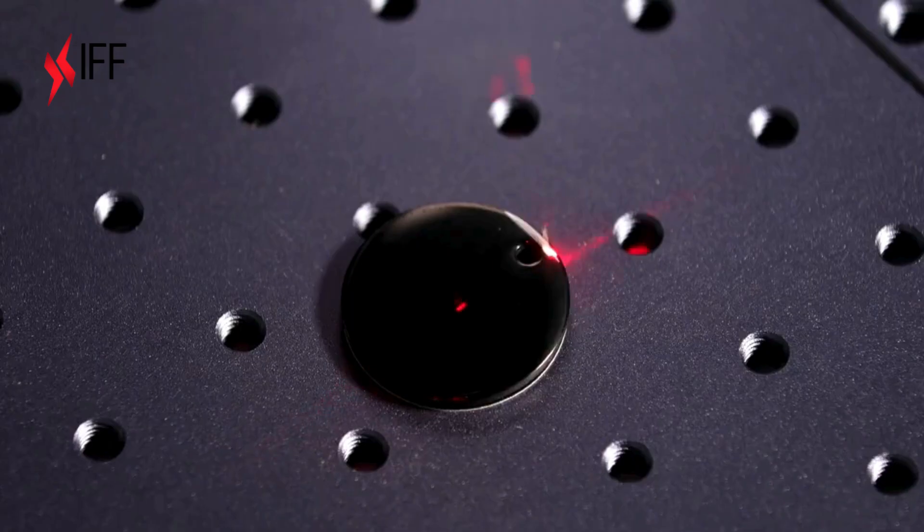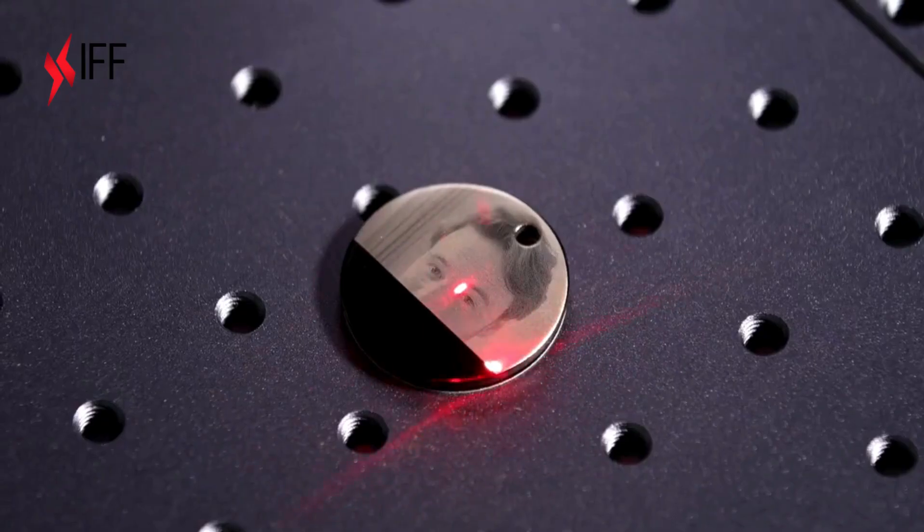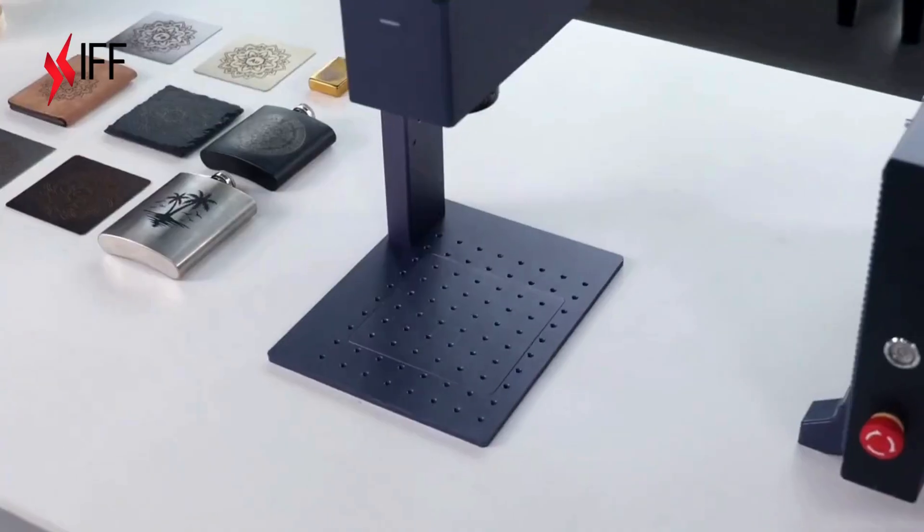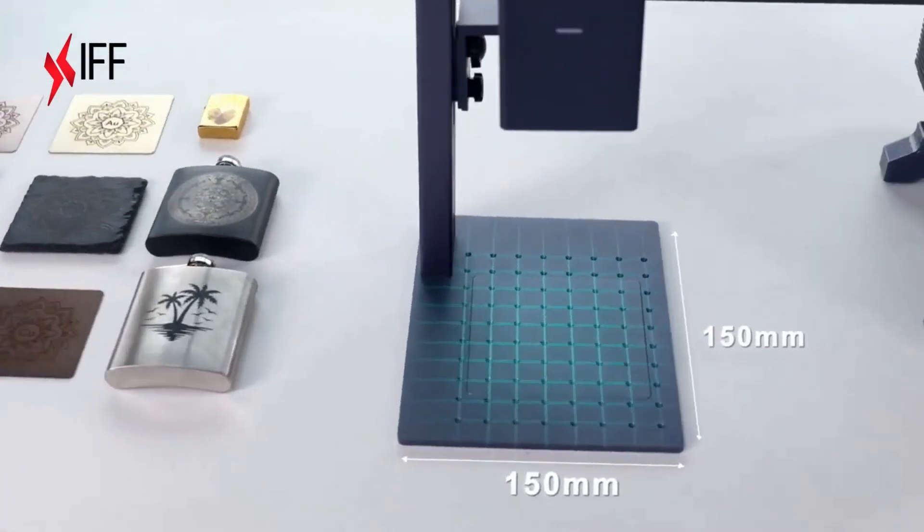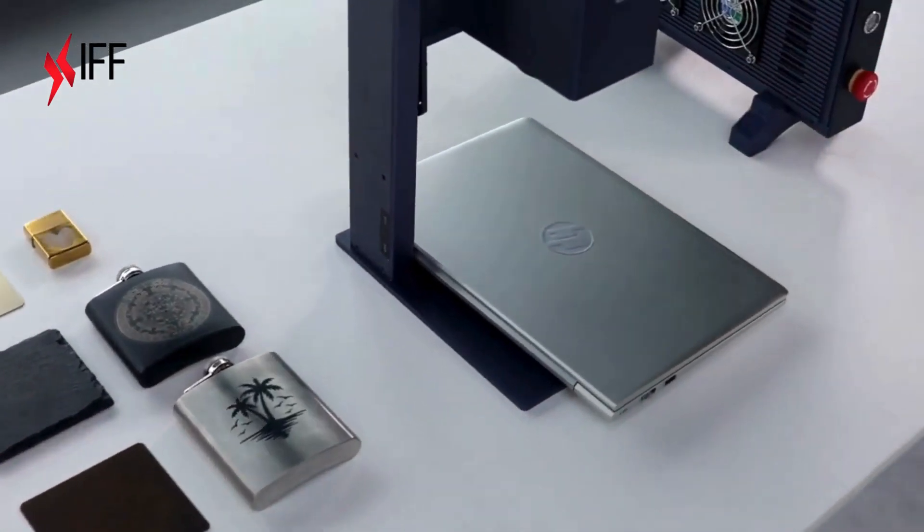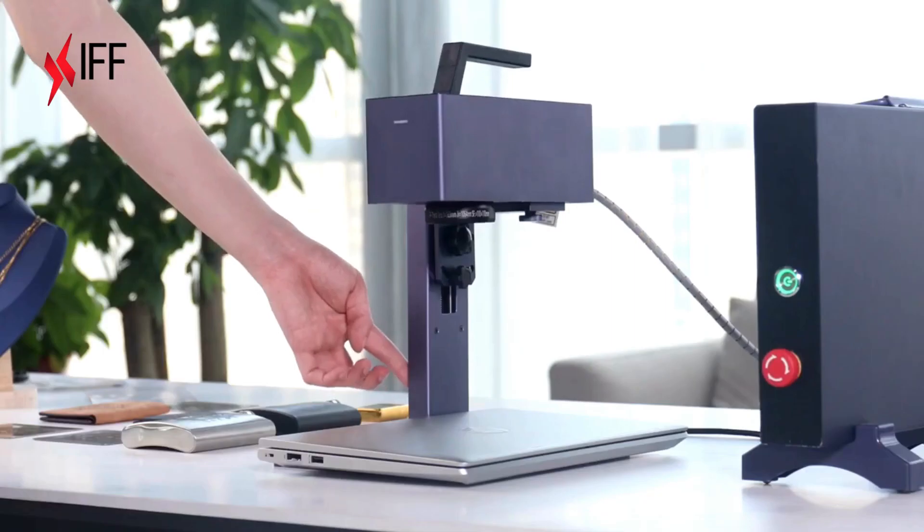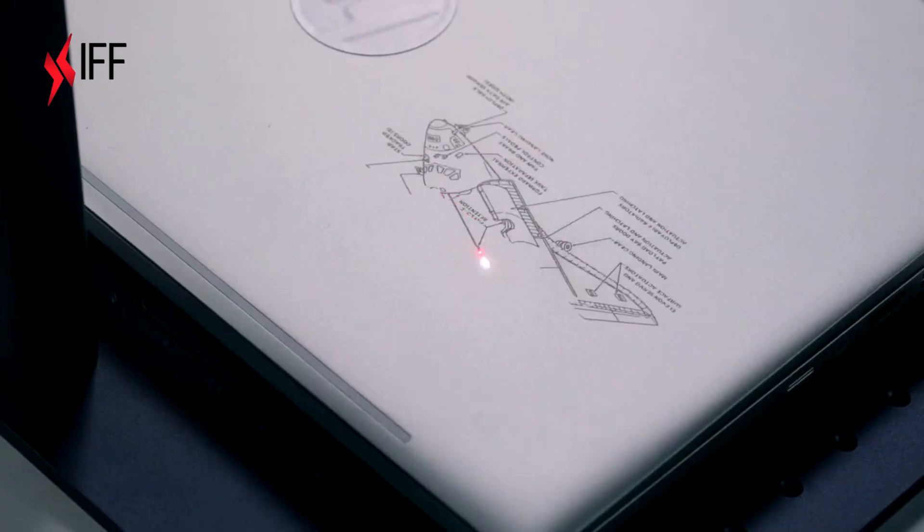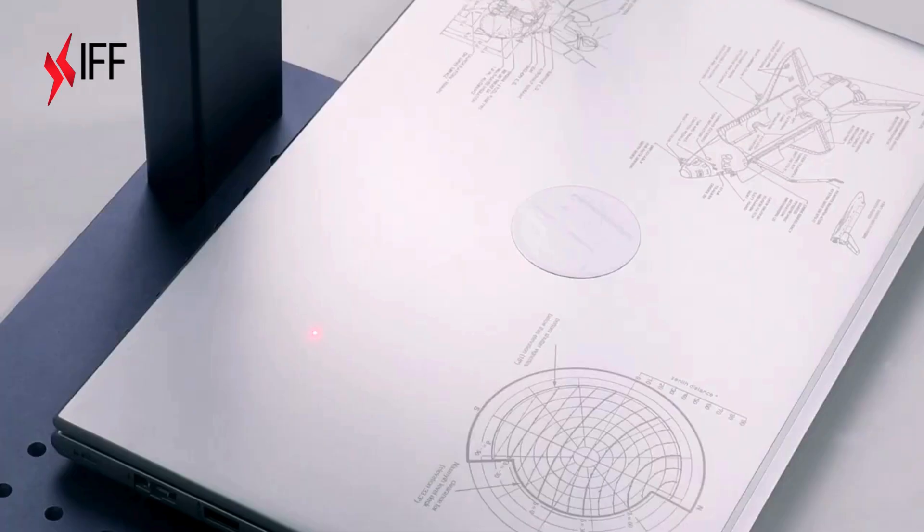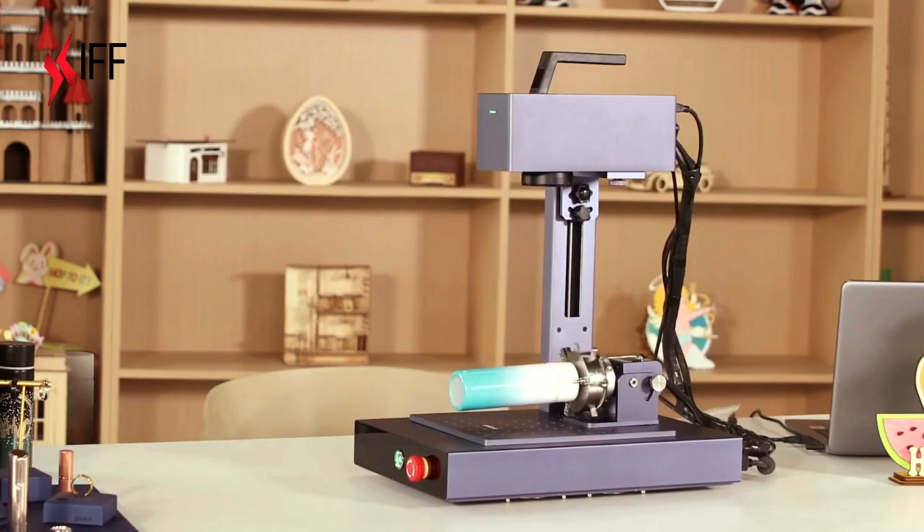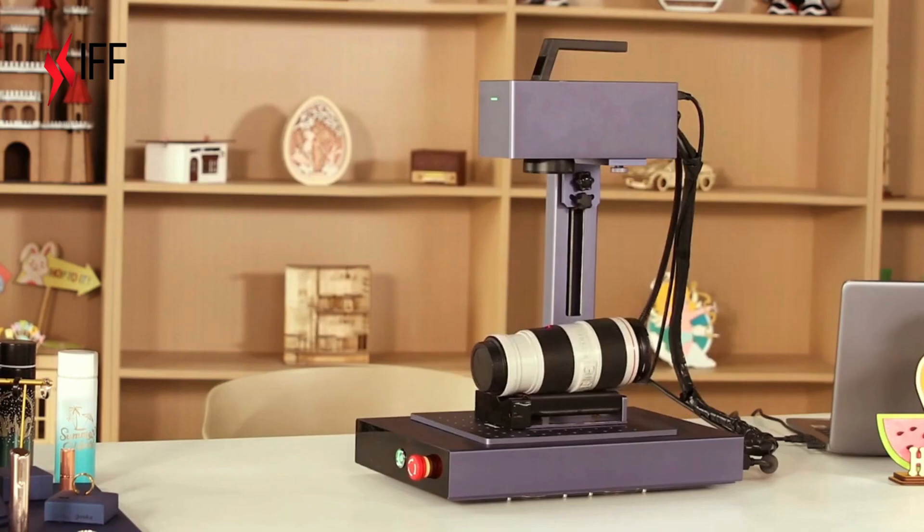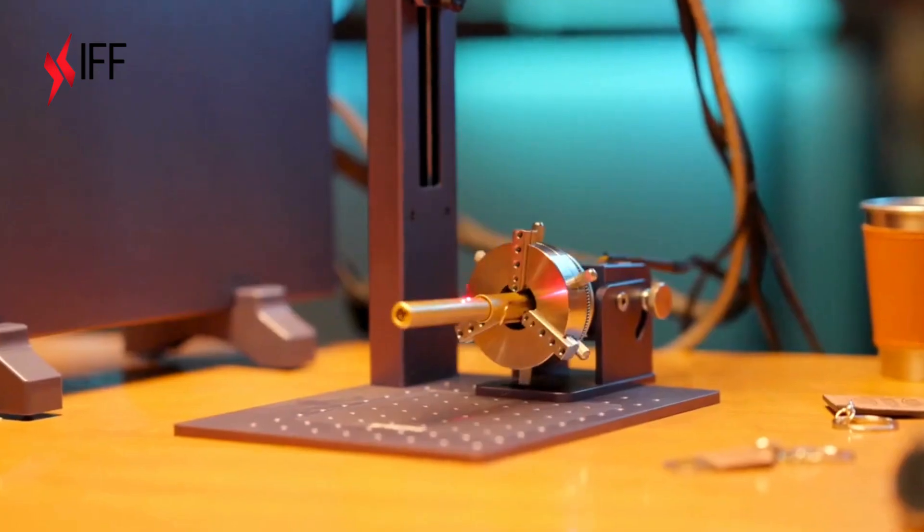With its large working area and electric lifting feature, even large objects can be easily engraved. It can also easily handle objects with irregular surfaces and even rotate the main unit directly to adapt to any engraving angle.